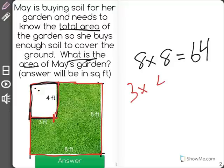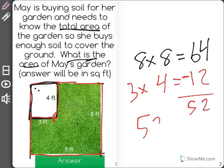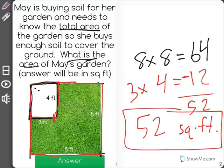So 3 times 4 is equal to 12. So the whole area would be 64, but 12 square feet are missing. So we have to subtract that to find out that May's garden covers 52 square feet for your correct answer.